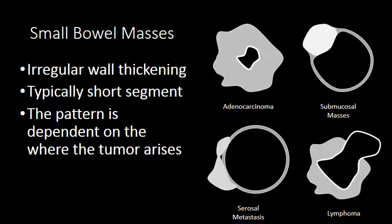Neoplasia of the small bowel tends to result in an irregular, solid-enhancing wall thickening. As opposed to inflammation or infection of the small bowel, the segment of affected bowel tends to be very short, although lymphoma can involve a long segment and serosal metastasis can be more diffuse or widespread.